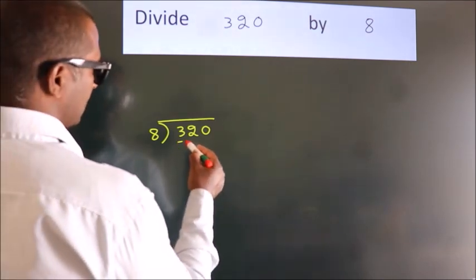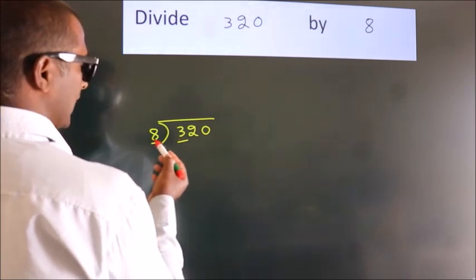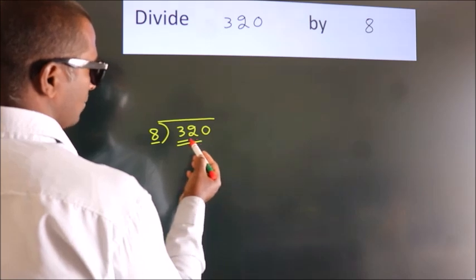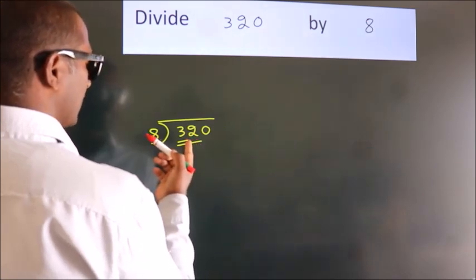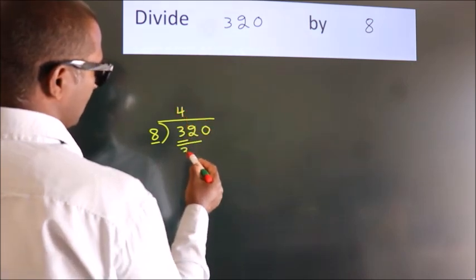Here we have 3. Here 8. 3 smaller than 8. So we should take 2 numbers: 32. When do we get 32? In 8 table. 8 times 4 is 32.